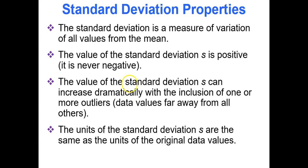The standard deviation is a measure of variation of all values from the mean. The value of the standard deviation is always positive—if you ever get a negative number you did something wrong. It can increase dramatically with the inclusion of outliers, so the standard deviation is not resistant. The units of the standard deviation are the same units as the original data values. If the data values are dollars, then the standard deviation is in dollars as well.